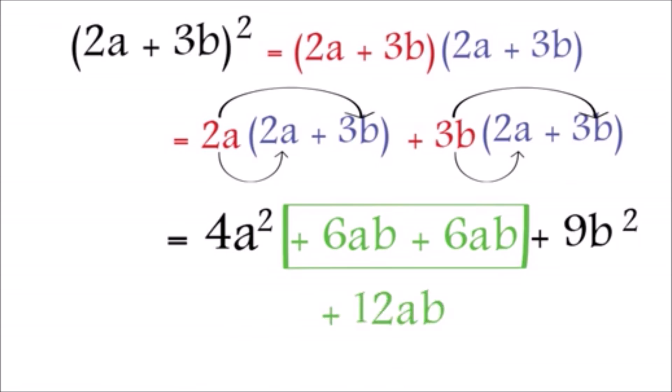Now, we can add the similar terms. We add 6ab to 6ab to get 12ab. The final answer is therefore, 4a squared plus 12ab plus 9b squared. I hope this was easy. Everything was basically being careful and remembering how to multiply. This question is a typical binomial expansion. We will learn an easier way to solve it, but it is still very important to learn this kind of expansion.